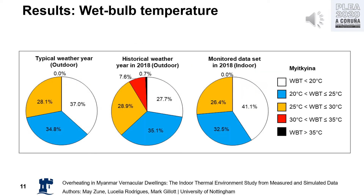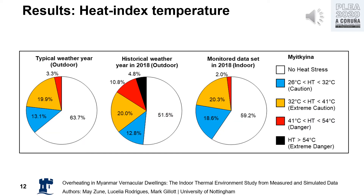In 2018, the outdoor dry-bulb temperature above 30 degrees Celsius significantly increased, as seen in the red color on the chart. In contrast, the indoor temperature for 2018 and the typical weather year remained below 30 degrees Celsius. In 2018, the outdoor heat index reached an extreme danger state shown in black, but the indoor heat index only reached a danger state, and only in a very small proportion.